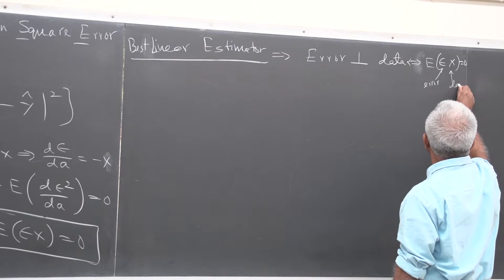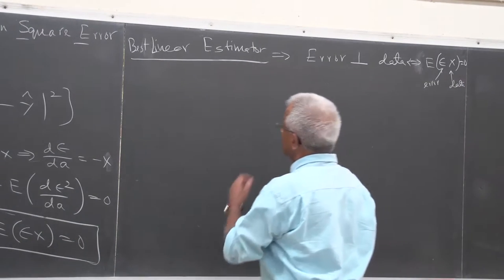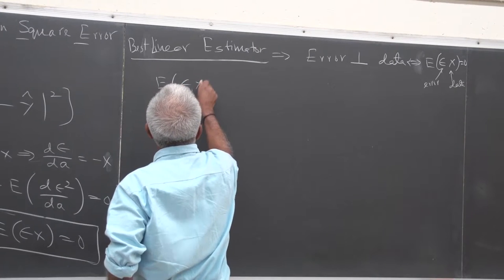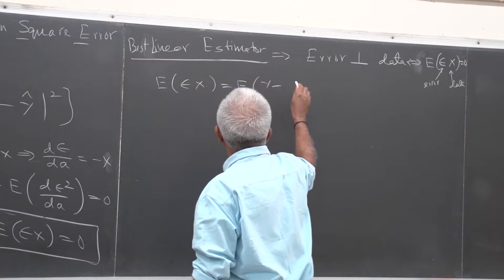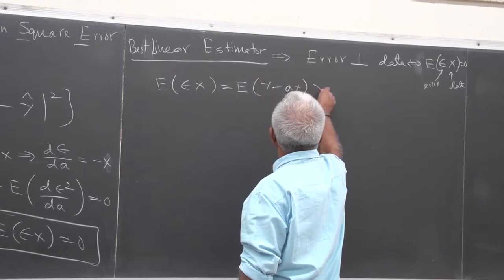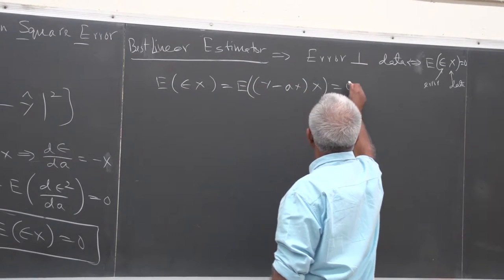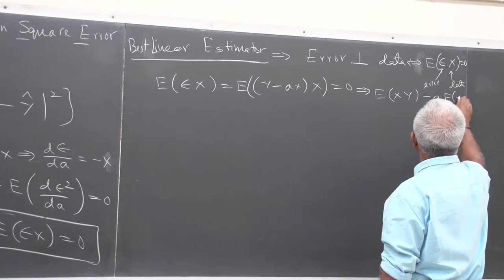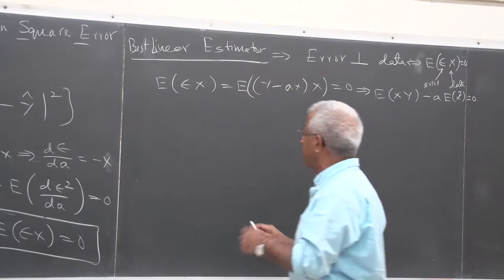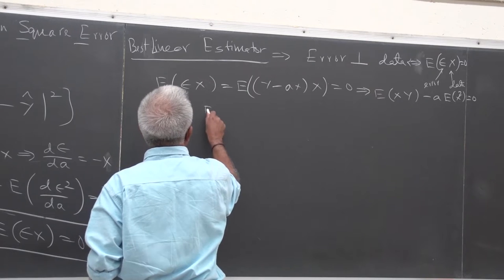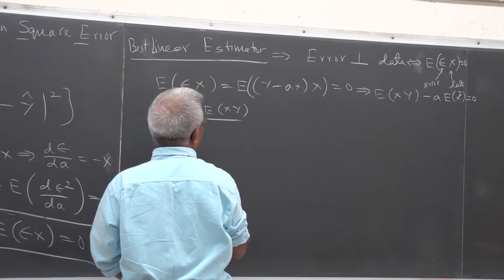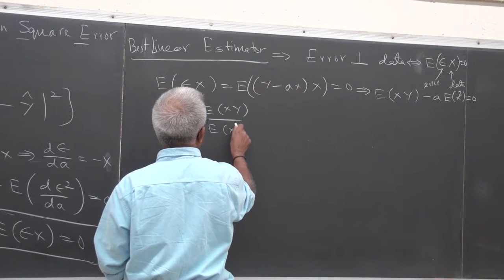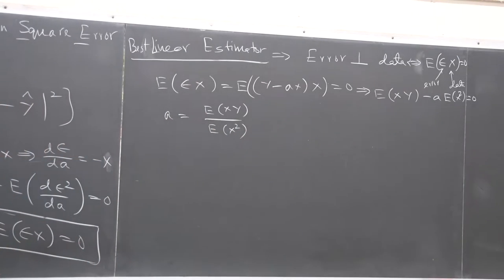Substituting for epsilon: E[(y − Ax) * x] = 0. This gives E[xy] − A * E[x²] = 0. Solving for A, the optimum A is E[xy] / E[x²]. That is the best linear estimator — that is this A, and it is a number.